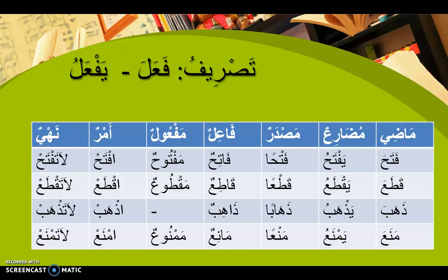The next word: ذَهَبَ (dhahaba) - he went. ذَهَبْتُ (dhahabtu) - I went. ذَهَبْنَا (dhahabna) - we have gone. ذَهَبْتَ (dhahabta) - you have gone. ذَهَبْتِ (dhahabti) to a female - you have gone. Mudari: يَذْهَبُ (yadhhabu) - he is going. أَذْهَبُ (adhhabu) - I am going. نَذْهَبُ (nadhhabu) - we are going. تَذْهَبُ (tadhhabu) - you are going. تَذْهَبِينَ (taddhabina) to a female. Masdar: ذَهَاباً (dhahaban). فَاعِل: ذَاهِبٌ (dhahibun) - the one who goes. ذَهَبَ is a lazim (intransitive verb) - it doesn't require a receiver. لَا مَفْعُولَ لَهُ - it has no maf'ul. Amr: اِذْهَبْ (idhhab) - go! Nahy: لَا تَذْهَبْ (la taddhhab) - don't go! To a female: اِذْهَبِي (idhhabi) and لَا تَذْهَبِي (la tadhhabi).